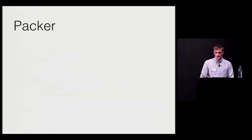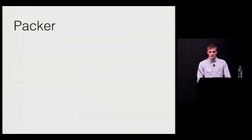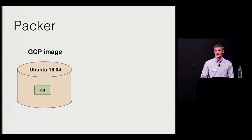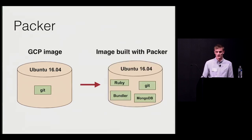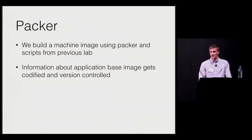Then we move on to the infrastructure as code tools, starting with Packer. It's easy to explain what Packer does because the person has already seen the benefits of using it. In the first lab when we did everything manually, before we could clone the application code from GitHub onto our remote virtual machine, we had to first install git — but it turned out the Ubuntu image from Google Cloud already has git pre-installed, so we could skip that step. So I remind the person of this case and say how cool it would be if our image had all the required packages pre-installed. In this lab, the person builds their own image using Packer and the script from the previous lab, then commits the Packer templates to the local git repo so all the information about the base image is codified.